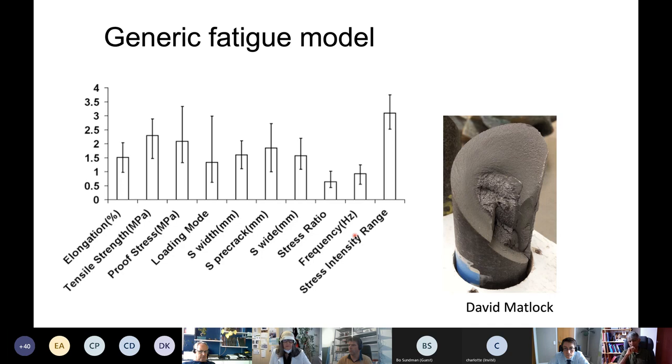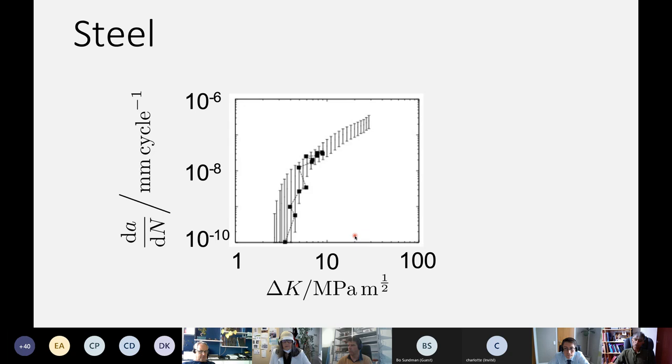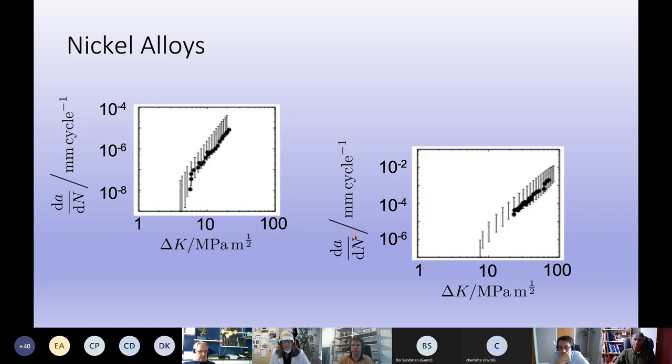This could apply to any material when you do a fatigue test. So if I now apply the model which is created on data only on steels to other materials it should work. And look, this is really quite extraordinary—the model predicts well for nickel alloys. No nickel alloys included in the database.